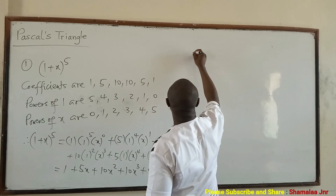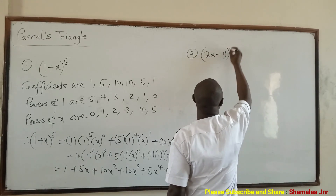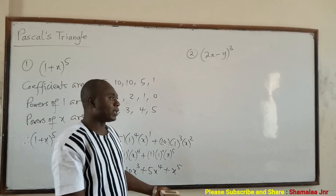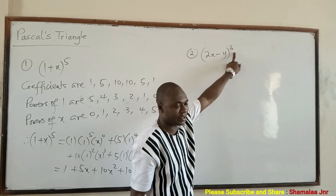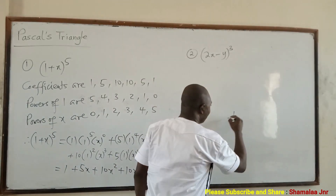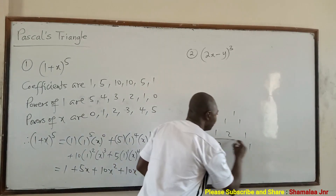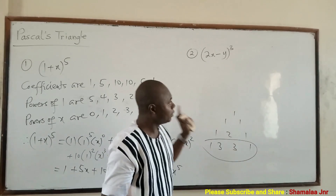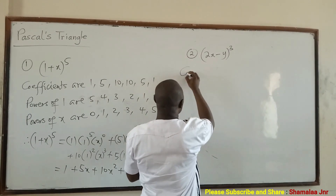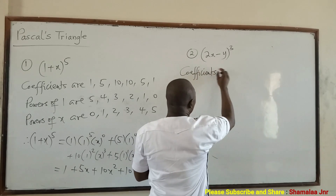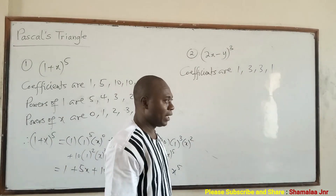Question number 2: expand (2x − y) raised to the power 3 using Pascal's triangle. The power is 3, so the coefficients from Pascal's triangle are 1, 3, 3, 1. The powers of 2x will start from 3 and reduce: 3, 2, 1, 0. The powers of negative y will start from 0 and increase: 0, 1, 2, 3. At every point when you add the powers, you should get 3.